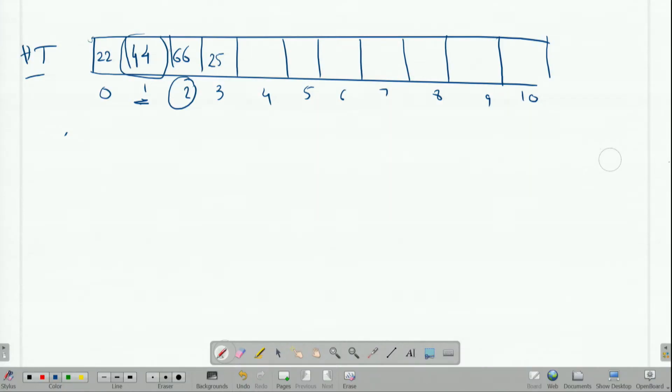Let me show you an example. First of all, this is my current hash table with 22, 44, 66, 25 here. Suppose I want to add 38 in this.